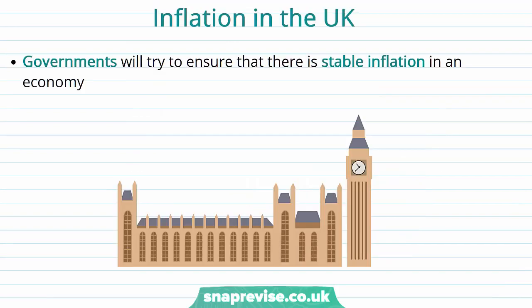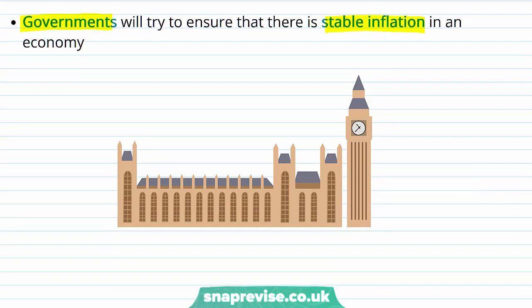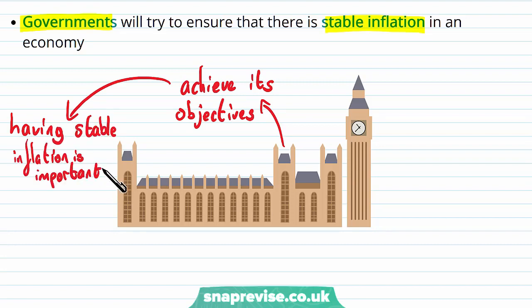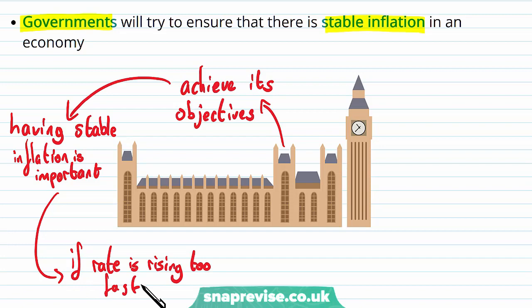Now let's talk about inflation in the UK and why governments even care about inflation. Governments want to have stable inflation, and this stems from wanting to achieve macroeconomic objectives. Having a stable inflation rate is very important to an economy. Having the inflation rate jump from 5% to 6%, all the way up to 25%, and then down to minus 5%, is generally undesirable. If the inflation rate is rising too fast, the economy cannot adapt quickly enough.